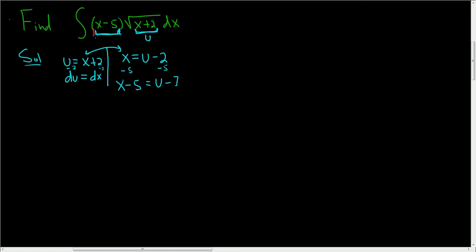And so now we're ready to go. We have x minus 5, it's right here, and that's equal to u minus 7, and we have u as x plus 2. So let's make the substitution.